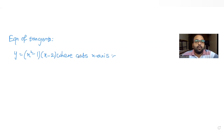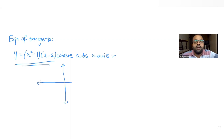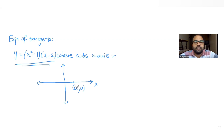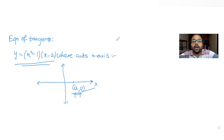We need to find all the equations of tangents at the points where this curve cuts the x-axis. When any point lies on the x-axis, it has an x-coordinate and the y-coordinate becomes zero. So to find the points of intersection of this curve with the x-axis, we put y as 0 in the expression.